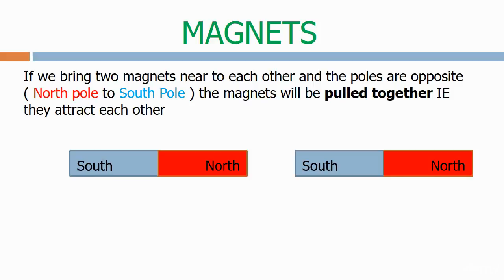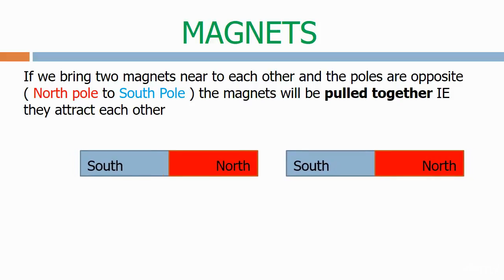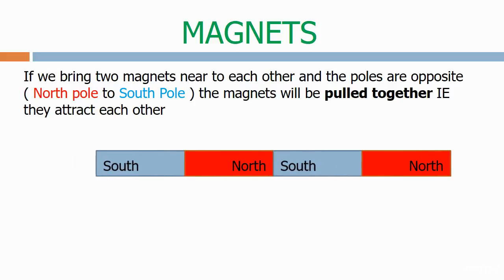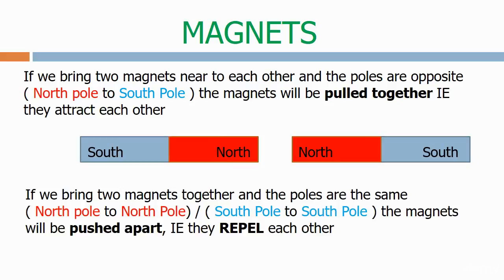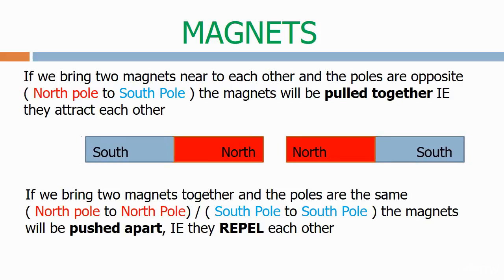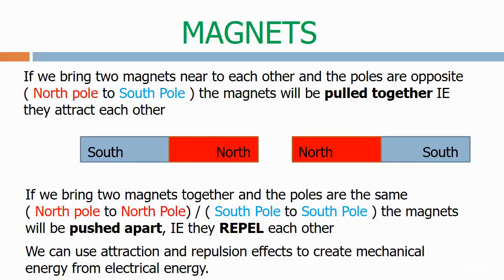Here we have that situation. Two magnets with north and south poles. As they come together they stay together — they're attracted. If we now bring two magnets together and the poles are the same, north pole to north pole or south pole to south pole, the magnets will be pushed apart — they repel each other, as shown. We can use attraction and repulsion effects to create mechanical energy from electrical energy.